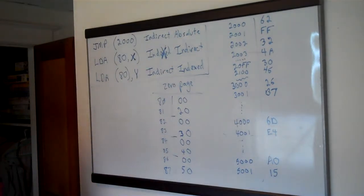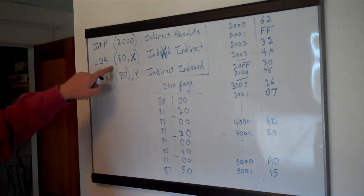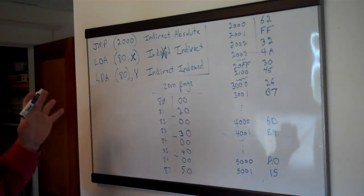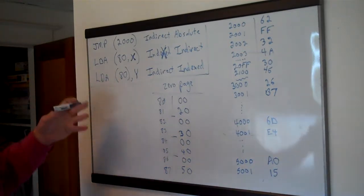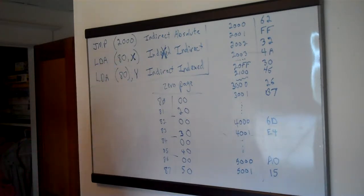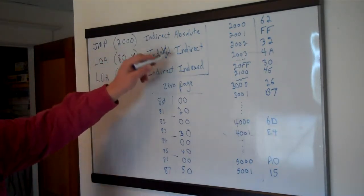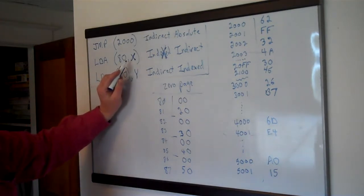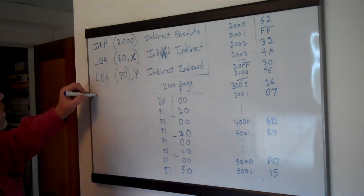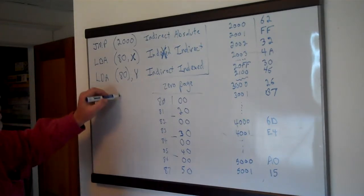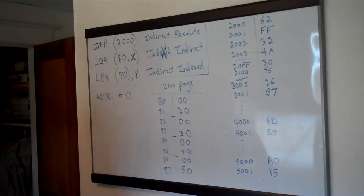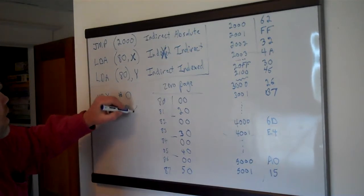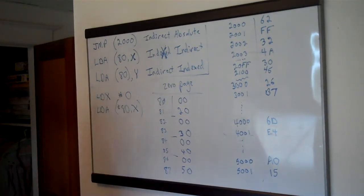So if it helps, the one with X has 'indexed' with an X in it come first — a little mnemonic. What this one does is it does the thing inside the parentheses first, kind of like algebra where you do the stuff inside the parentheses first. It does the indexing first and then the indirect. So what it does first is add X to 80. Let's say we load X with zero and then load A from (80,X) indirectly.